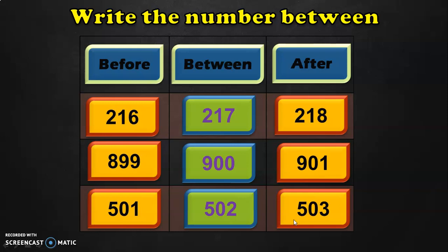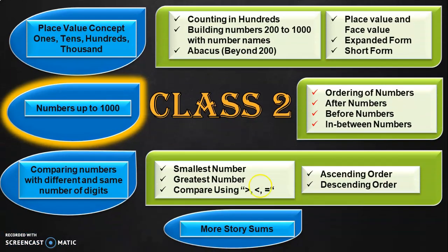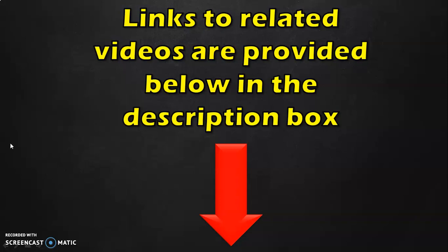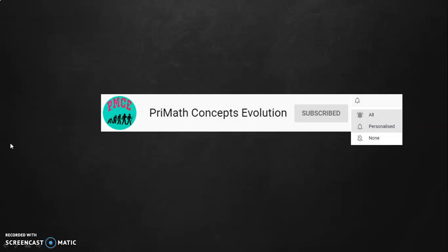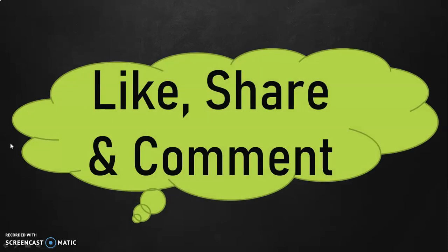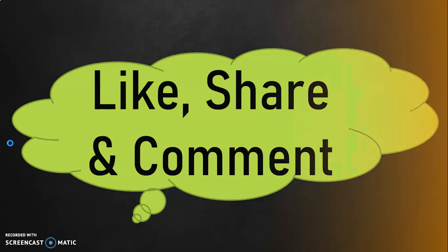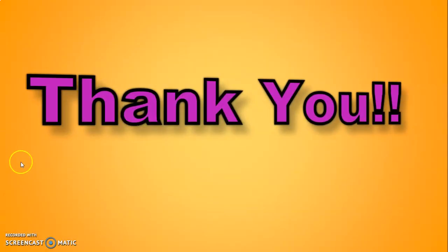Hope you enjoyed doing the number activities for numbers between 200 to 1000. With that we have covered all the topics: ordering of numbers, after numbers, before numbers, and in-between numbers for numbers up to 1000. All the learning outcomes are covered in separate videos and links to all related videos are provided below in the description box. If you like the content, click the subscribe button and also the bell button — choose the 'All' option to get notifications of all updates. Give a thumbs up, share it with your friends, and provide your valuable feedback in the comment section. Thank you for watching!